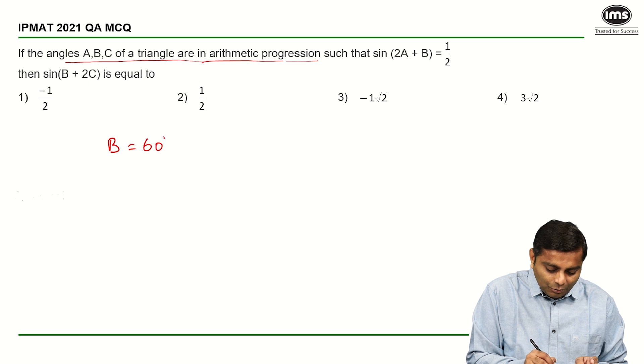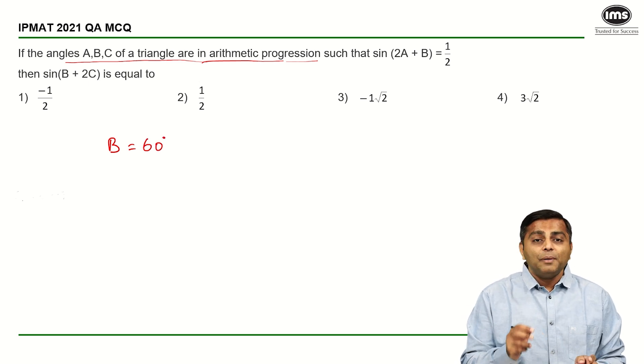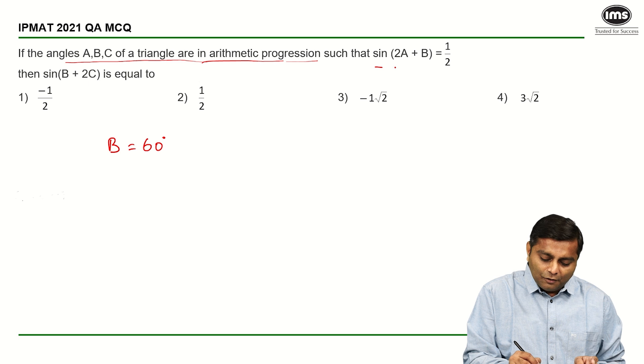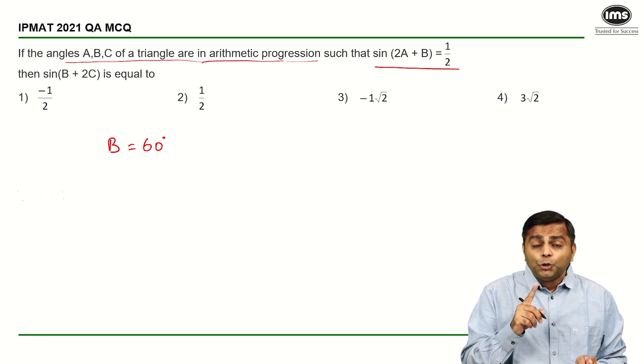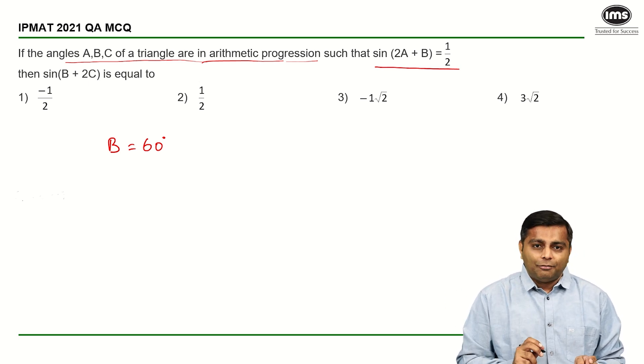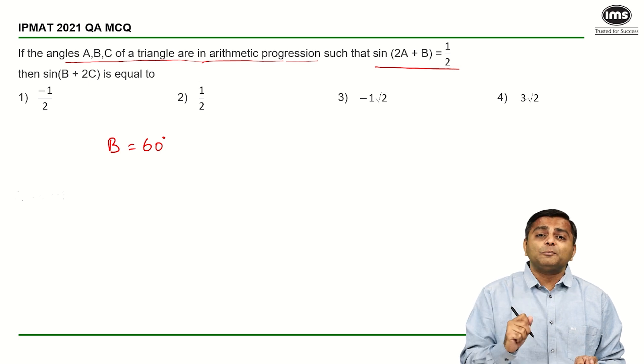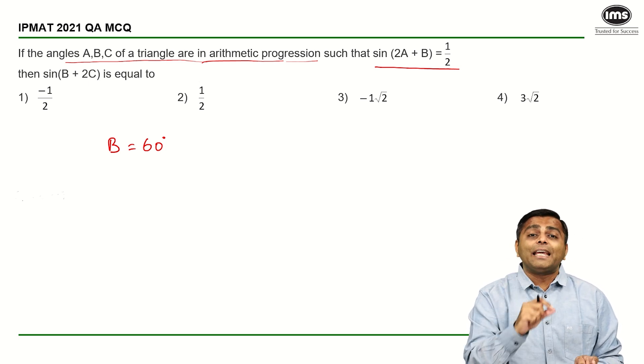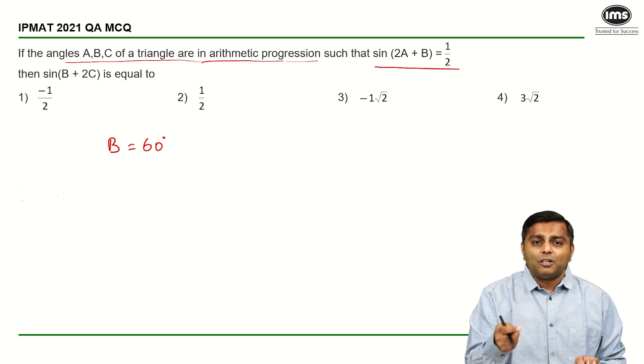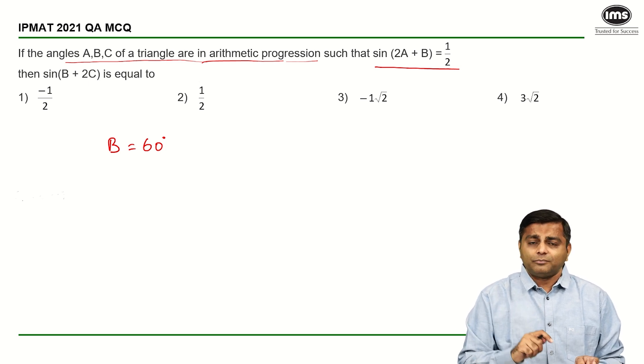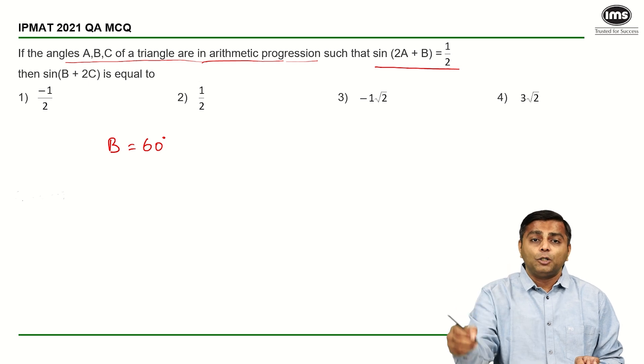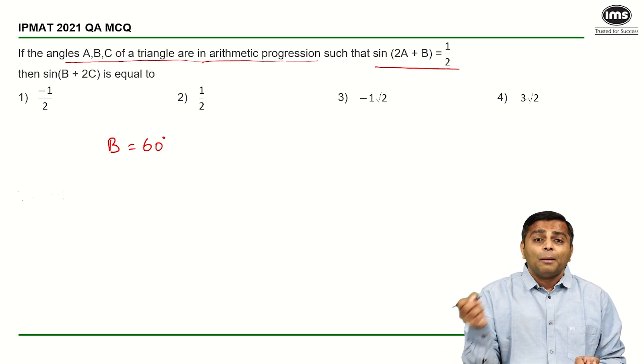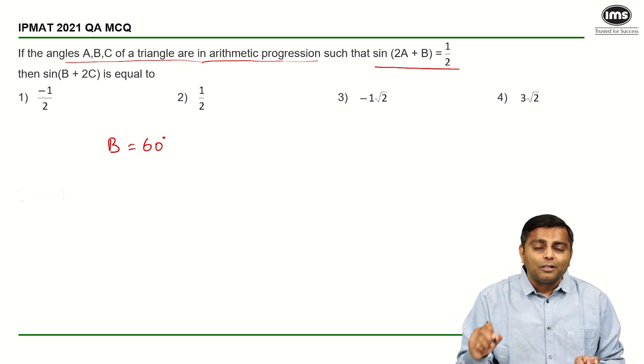Another thing given is sine of something is half, sine of 2A plus B. You should know that sine of 30 is half, but 2A plus B cannot be 30 because we know that B is 60, and anyway because A is an angle it cannot be negative. So if sine of 2A plus B is given as half, but we know that 2A plus B cannot be 30.